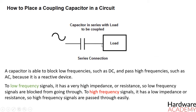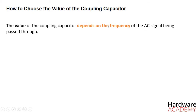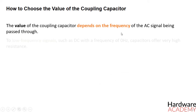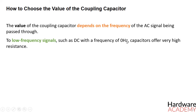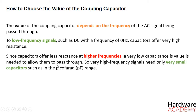Now that we know what a coupling capacitor is and how to place it in a circuit for coupling, the next thing is how to choose an appropriate value for the coupling capacitor. The value of a coupling capacitor depends on the frequency of the AC signal being passed through. Capacitors are reactive devices, meaning they offer different impedance or resistance to signals of different frequencies. To low frequency signals such as DC with a frequency of 0 Hz, capacitors offer very high resistance, and this is how capacitors are able to block DC signals. However, as the frequency of the signal increases, the capacitor offers progressively less resistance. The capacitor reactance changes according to the formula, where F is the frequency and C is the capacitance. Since capacitors offer less reactance at higher frequencies, a very low capacitance value is needed to allow signals to pass through.